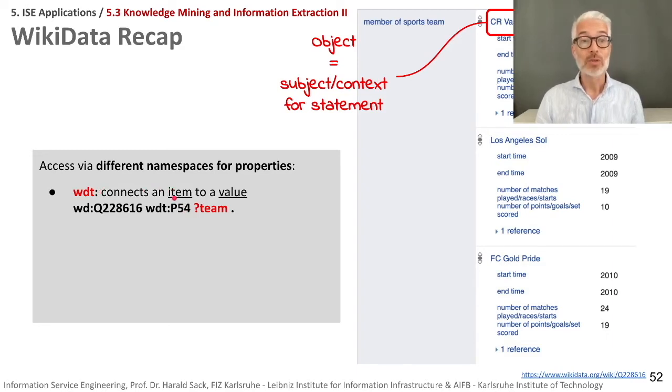This connects an item to a specific value. If you want to get the information that somebody has played or is member of the sports team CR Vasco da Gama, then of course you use WDT P54 and then you get the team statement for a specific player.